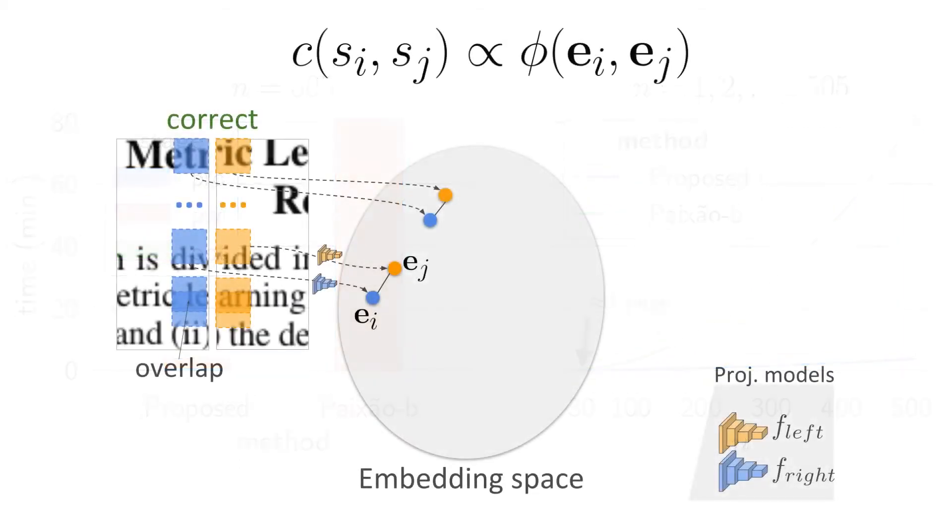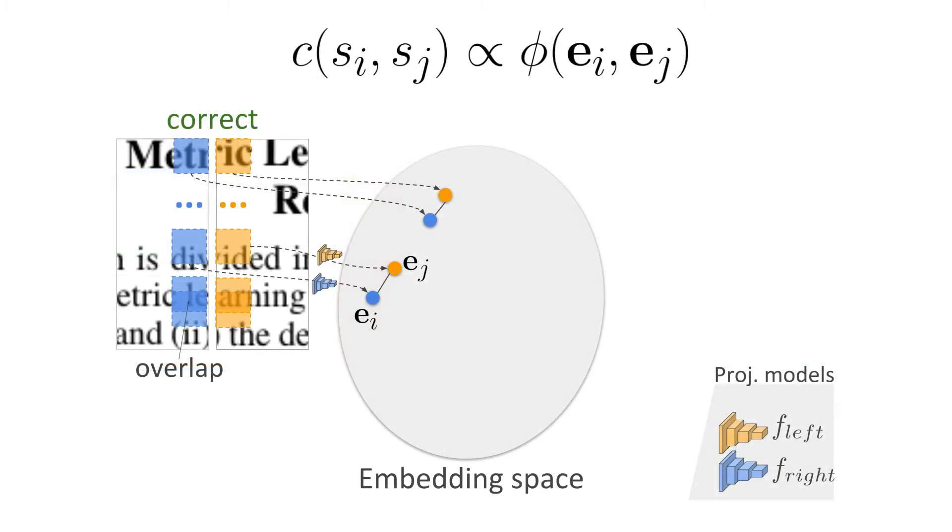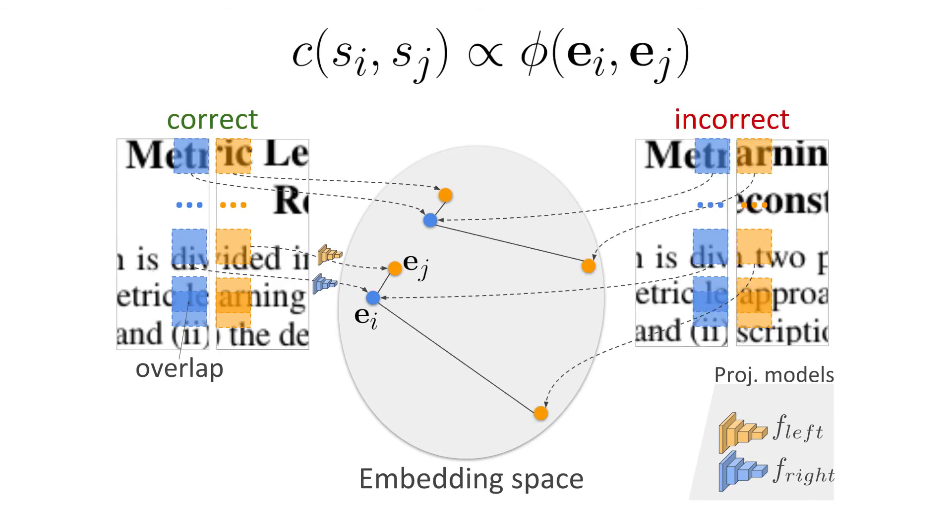In summary, we used two networks to locally project the shreds' boundaries onto a metric embedding space. Embeddings from compatible pairings are expected to be close, whereas embeddings from incompatible pairings should be further apart.